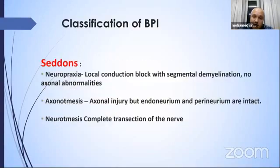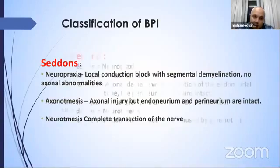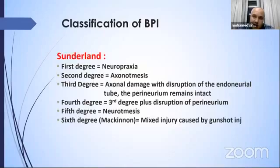Regarding severity of injury, Seddon classifies nerve injuries into three categories: neuropraxia — local conduction block with segmental demyelination, no axonal abnormality, and usually full recovery; axonotmesis — axonal injury but the endoneurium and perineural sheets are intact; and neurotmesis — complete transection of the nerve, where surgical repair is mandated. Sunderland further classifies these into five groups, with the first group equivalent to neuropraxia and the second equivalent to axonotmesis.